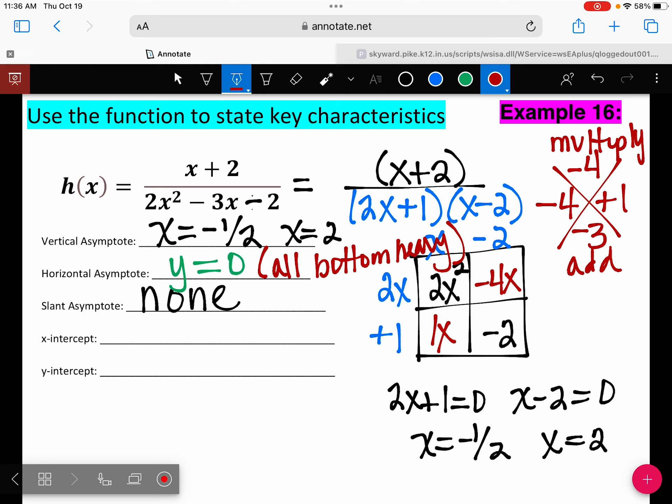Okay, x-intercepts always come from the numerator. What factor do we have in the numerator? X plus 2. Let's set that equal to zero. When you solve that, you get negative 2. So I'm going to write that as an ordered pair, negative 2, zero. Now for your y-intercept, you substitute a zero in the function for x.